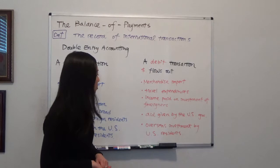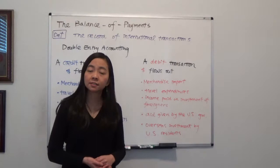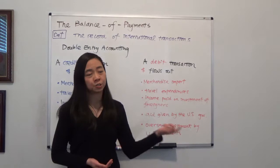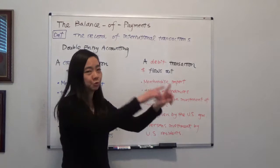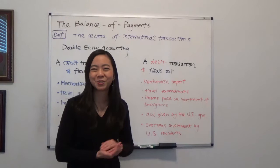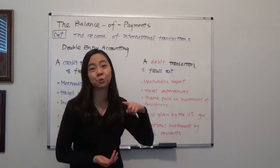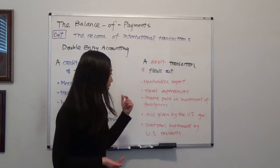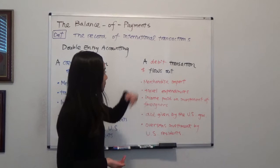Income paid on investment by foreigners is also a debit transaction. For example, if a foreigner — say a European — is investing in Apple stocks, and when Apple pays stock dividends to this foreign investor, money flows out from the United States. Aid given by the US government is another example: the US gave military aid to Ukraine, and when that money flows out from the US government, it is recorded as a debit transaction.